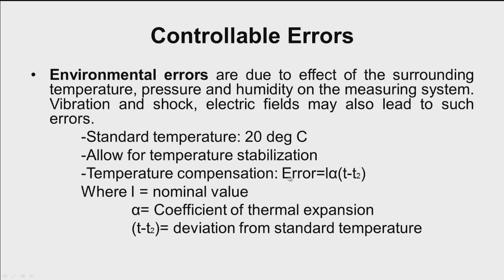The compensation can be calculated using the relationship: Error = L × α × (T − T₂), where L is the nominal value, α is the coefficient of thermal expansion of the workpiece material, and (T − T₂) is the deviation from standard temperature. If T is 20°C and T₂ is 22°C, then the deviation is 2 degrees. Using this relationship, we can calculate the error due to environmental factors and account for it when giving measurement results.